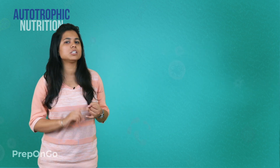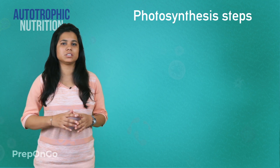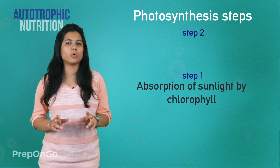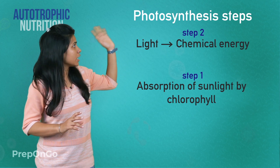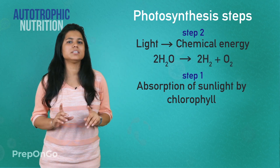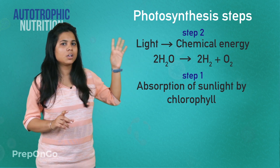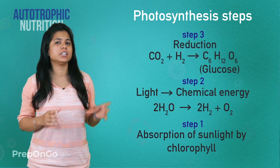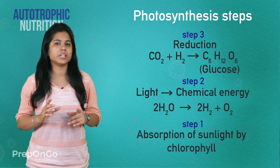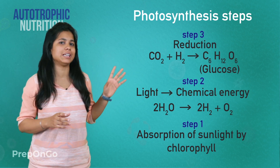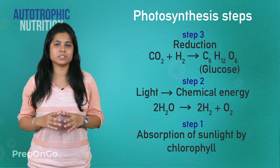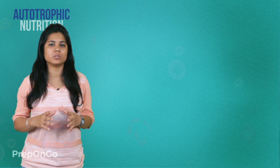Now we have seen what photosynthesis is and the chemical reaction involved. Let's see the steps in the photosynthesis process. The first step is absorption of sunlight by the chlorophyll. The second step involves two actions: conversion of light energy into chemical energy, and splitting of water into hydrogen and oxygen. The hydrogen released is used in the third step, where carbon dioxide is reduced to carbohydrates. This reduction is due to the hydrogen released in step 2, giving us carbohydrates, which are the main nutrients to the plants.